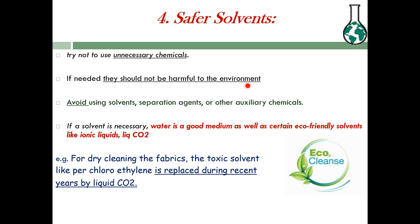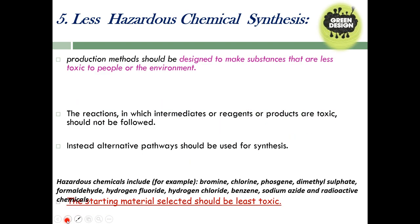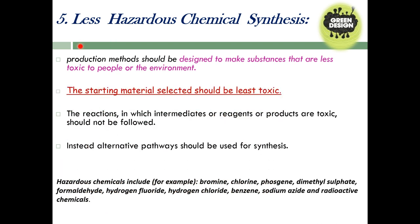Try not to use unnecessary chemicals. If solvents are needed, they should not be harmful to the environment. Avoid using solvents, separating agents, and other auxiliary chemicals where possible. If there is no option, try to use water as a solvent. Other eco-friendly solvents include ionic liquids and liquid CO2. For dry cleaning, perchloroethylene is now being replaced by liquid CO2 — though not all laundries have adopted this yet.